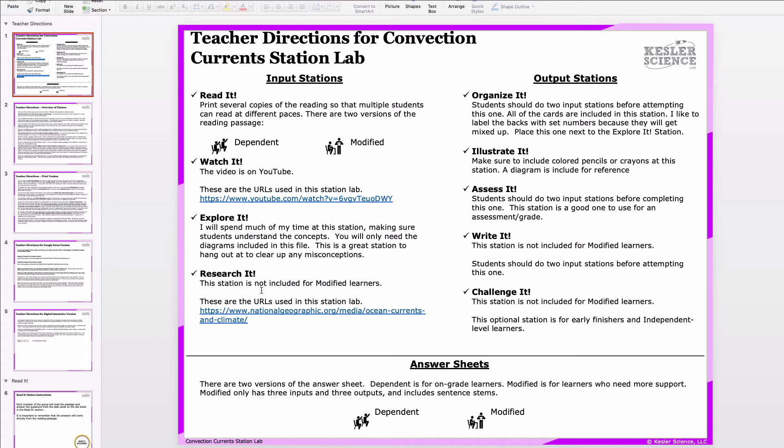When they're done, collect their answer sheets and you can choose to check whatever you want. I personally check the Assess It station as a comprehension check and then maybe a couple of the other stations just as a completion grade. Now, if you have to give grades on this, just remember that this is the beginning of the learning process. And what a lot of teachers do is they choose a different portion of the station lab to grade each time. That way you're not grading eight different stations for every single student. That could get tedious very quickly.